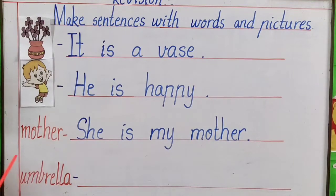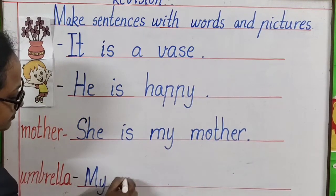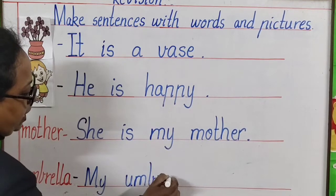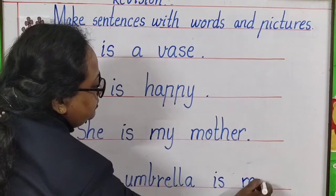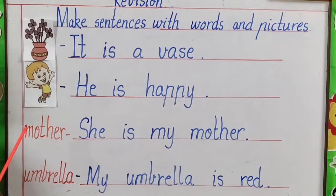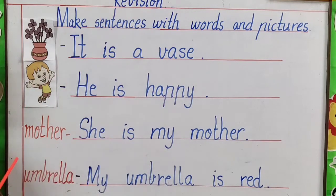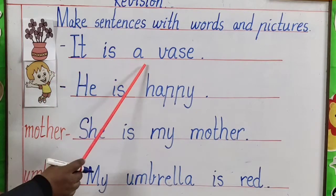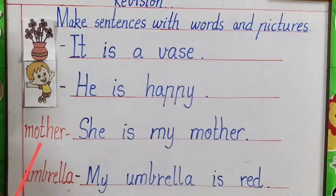The last word is umbrella. My umbrella is red. Correct. My umbrella — U-M-B-R-E-L-L-A — umbrella is red. Full stop. In each sentence we have started with a capital letter and at the end we have put a full stop. Let's revise once again: It is a vase. He is happy. She is my mother. My umbrella is red.